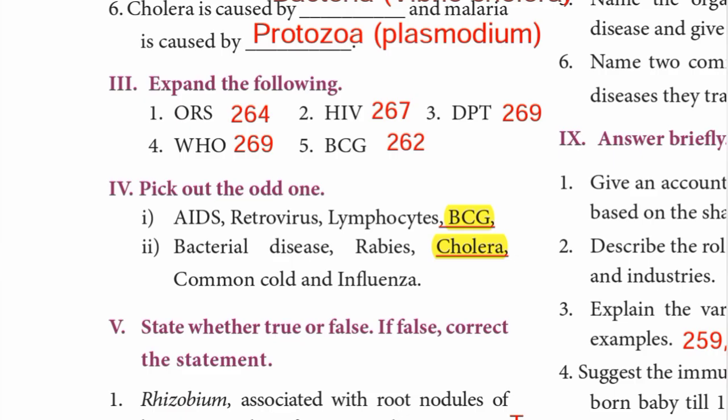Roman number four: Pick out the odd one. Number one — AIDS, retrovirus, lymphocytes, BCG. The odd one is BCG, as it is a vaccine. Number two — bacterial diseases: Rabies, Cholera, Common Cold, and Influenza. The odd one is Cholera, since the others are viral diseases.